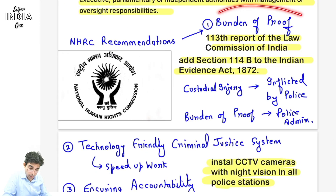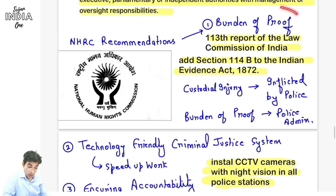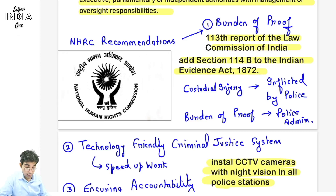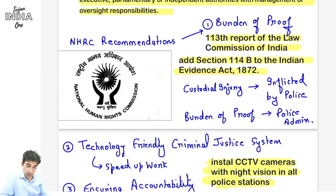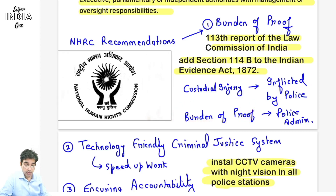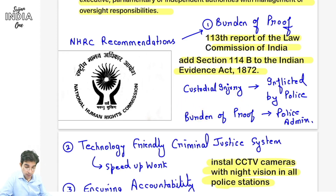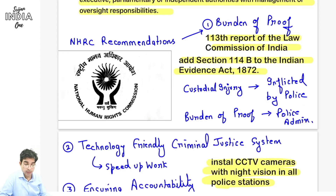NHRC - National Human Rights Commission, Rashtriya Manav Adhikar Aayog - ki recommendations: pehla hai burden of proof. 113th report aayi thi Law Commission of India ki. Uske according NHRC ne bola - Section 114B, Indian Evidence Act 1872 mein - is section aane se kya hoga ki agar police custody mein injury hui toh maana jayega ki yeh injury police ne di. Aur agar police ne nahi di toh iska proof bhi police administration ko hi dena padega - toh in a way custody mein jo hai uske human rights ko safeguard karne ki koshish ki ja rahi hai.